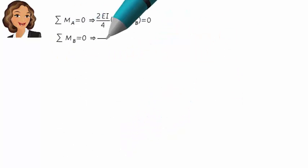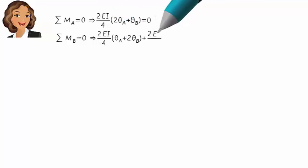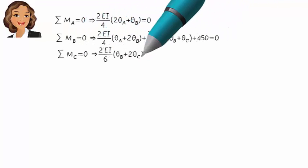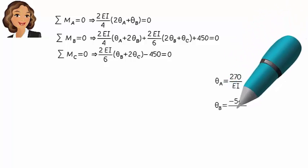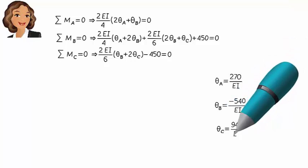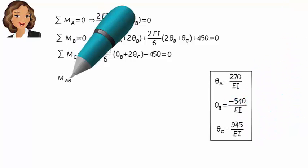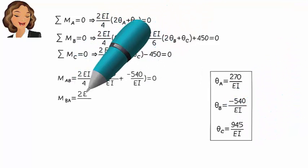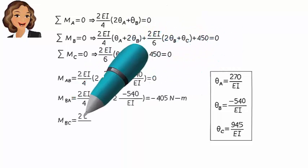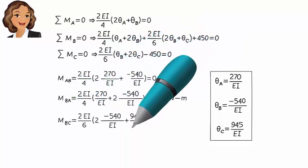Substituting the slope-deflection expressions into the equilibrium equations, we get a system of equations. Solving these simultaneously for the unknown rotations, we get the values of theta. Now we substitute these values back into the slope-deflection equations to determine the member-end moments.